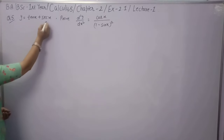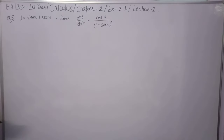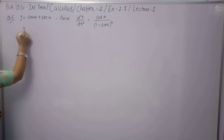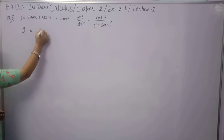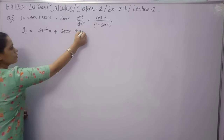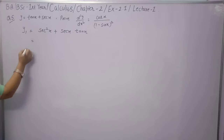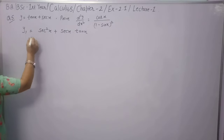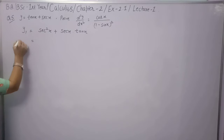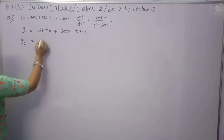Question 5: y = tan(x) + sec(x). Prove that the second derivative equals cos(x)/(1-sin(x))². First derivative: dy/dx = sec²(x) + sec(x)tan(x).